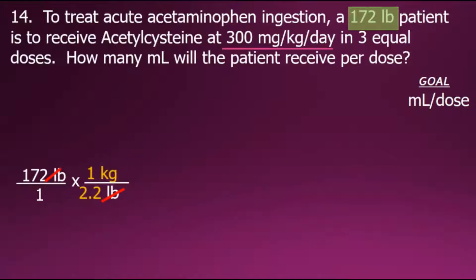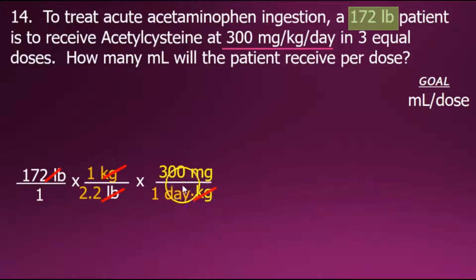We now have the weight of the patient in kilograms. To determine the amount of medication, we'll multiply it by the doctor's order, given as 300 milligrams per kilogram per day. This allows us to cancel out the common factor of kilograms since they have a value of one, leaving us with the medication in milligrams per day.